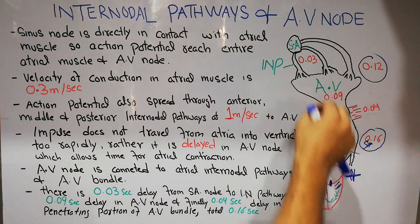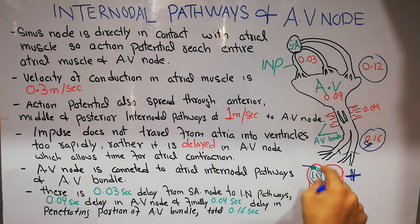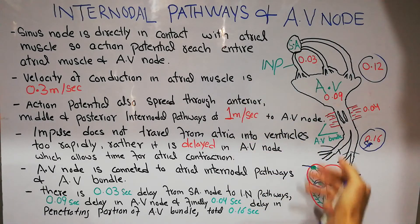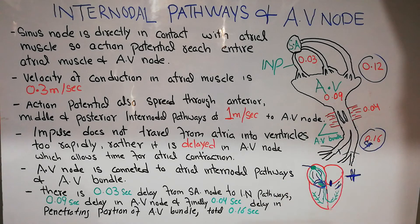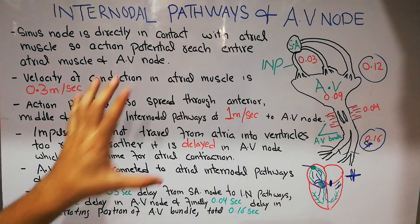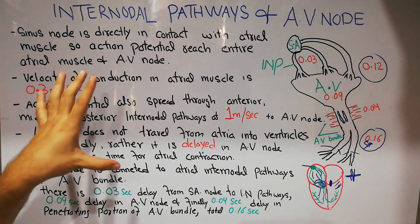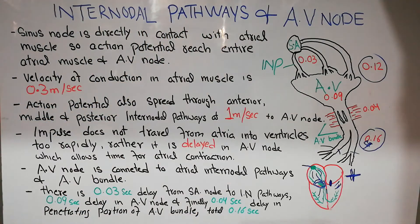The AV node is connected to the atrial internodal pathways and AV bundle. The AV bundle receives the impulse through the internodal pathways and transfers it to the bundle branches. There is a 0.03 second delay from the SA node to the internodal pathways, 0.09 second in the AV node, and 0.04 second in the penetrating portion of the AV bundle — a total of 0.1 second — allowing peaceful contraction of the atria before the ventricles. That concludes this lecture on internodal pathways and the AV node.